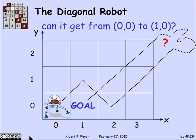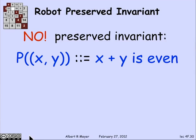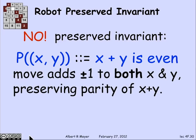The answer is settled by a preserved invariant. You can't get to the square (0, 1). The reason is that the sum of the coordinates being even is a preserved invariant of that set of robot moves. Any move adds ±1 to both x and y coordinates. Maybe x and y both go up by 1 — the sum increases by 2, so if it was even it stays even. Or they both go down by 1. Or one goes up and the other goes down, in which case the sum doesn't change. In every case, if x + y was even, it stays even. And if it was odd, it stays odd. Moves preserve the parity of x + y, and the invariant is that x + y is even.